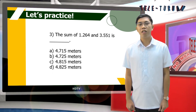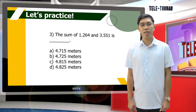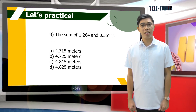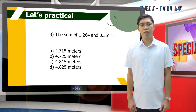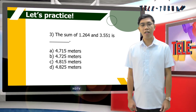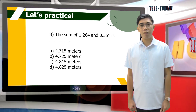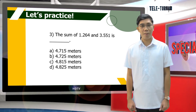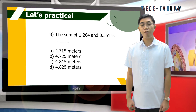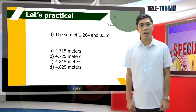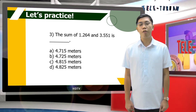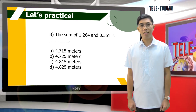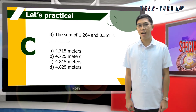Number 3: the sum of 1 and 264 thousandths and 3 and 551 thousandths is blank. A: 4 and 715 thousandths. B: 4 and 725 thousandths. C: 4 and 815 thousandths. Or D: 4 and 825 thousandths. Letter C is the correct answer.